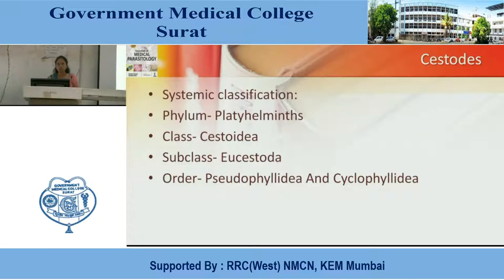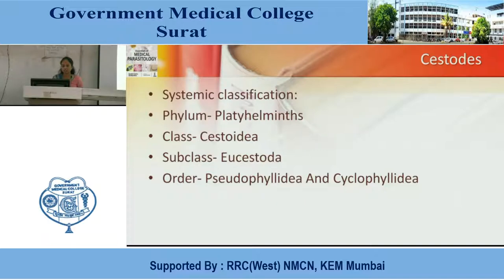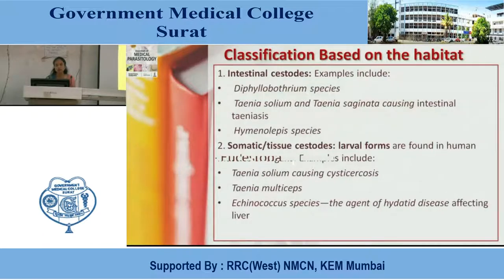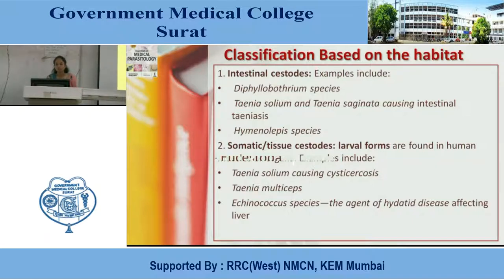We will now see about the cestodes. Cestodes are classified into two types. First is a systemic classification. In systemic classification, the first phylum is Platyhelminthes, class is Cestoidea, subclass is Eucestoda, and the orders of these are two types: Pseudophyllidea and Cyclophyllidea. Second classification is based on habitat of parasites — two types: intestinal cestodes and somatic or tissue cestodes. For examples, it includes Diphyllobothrium species, Taenia solium and Taenia saginata that cause intestinal taeniasis, and Hymenolepis species which cause intestinal cestoidosis infections.